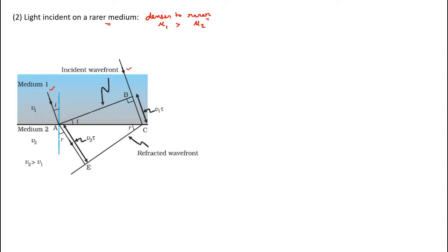These are the incident rays and this is the incident wavefront. The angle here is 90°, because a ray and wavefront should make an angle of 90°. This is the refracted wavefront, so this angle is also 90°. AB moves such that this angle is 90°. All points on AB will be simultaneously at EC — AB and EC are the same wavefront but separated by a time gap.